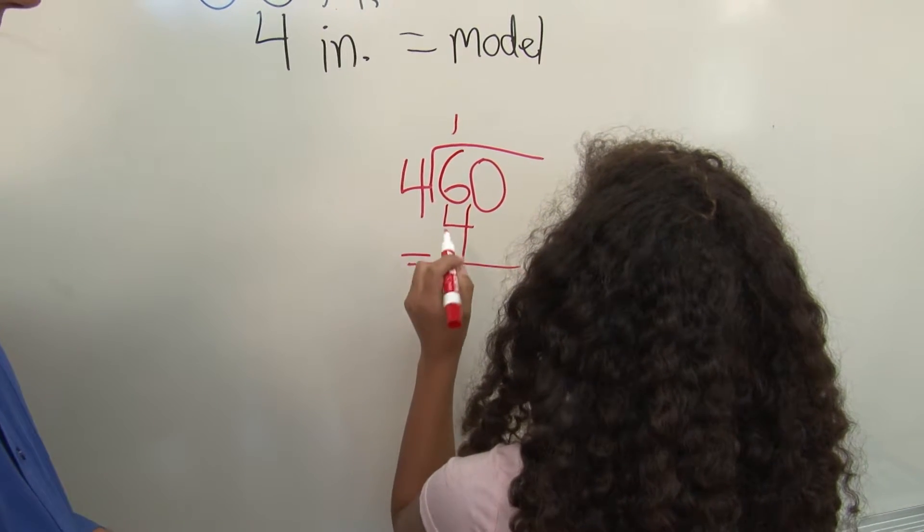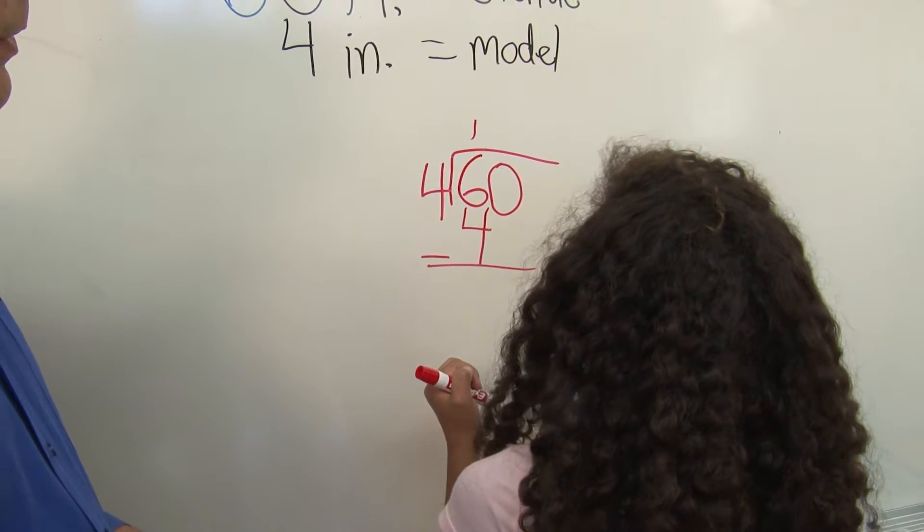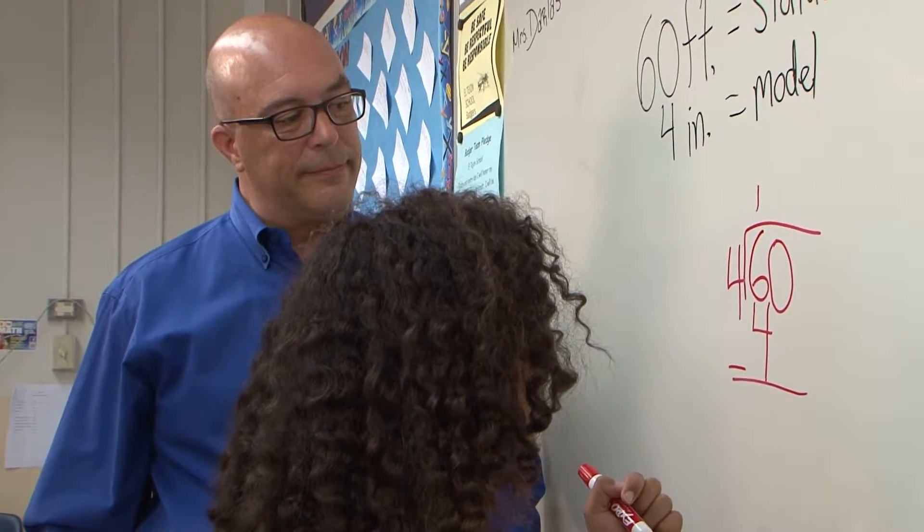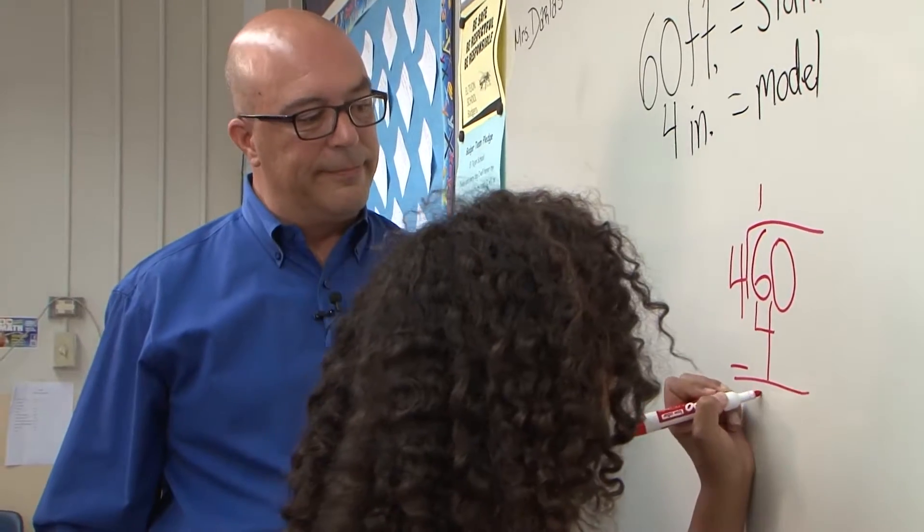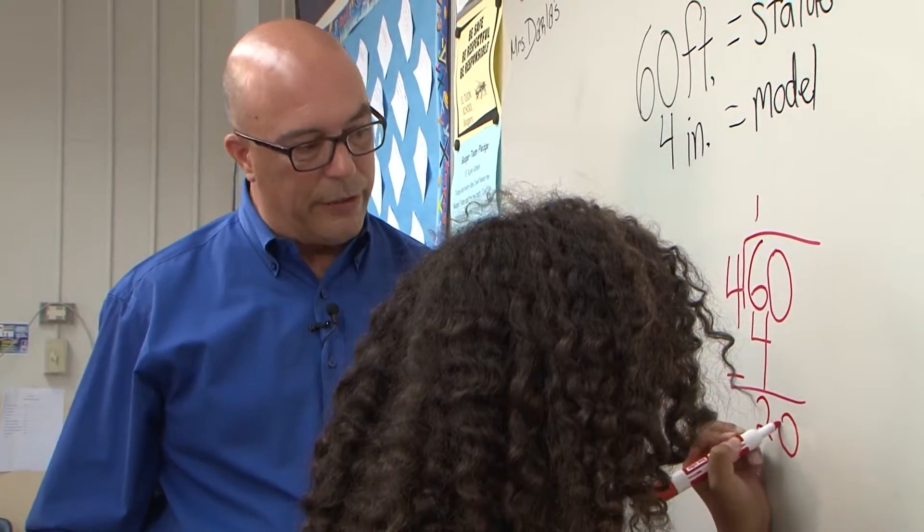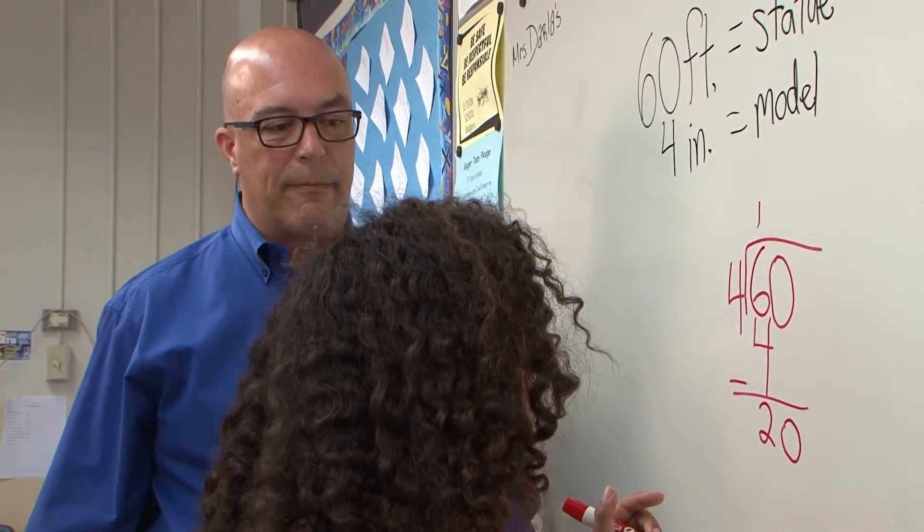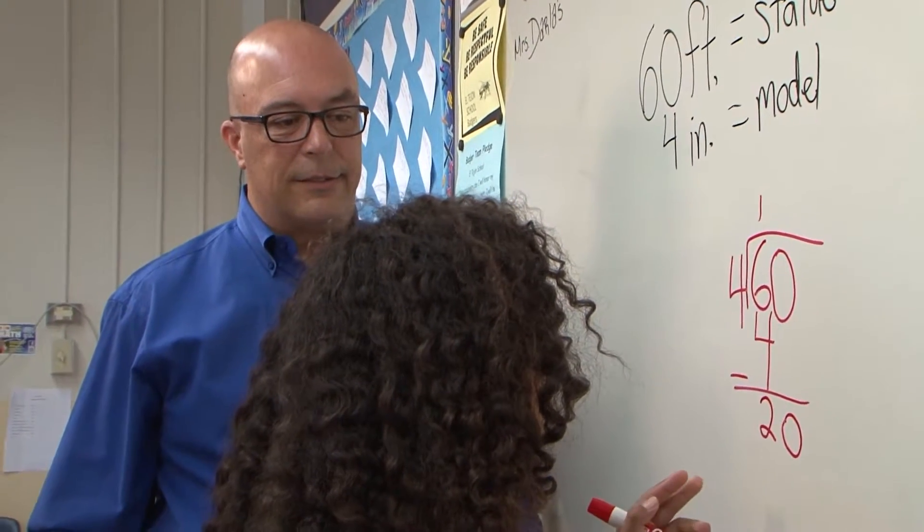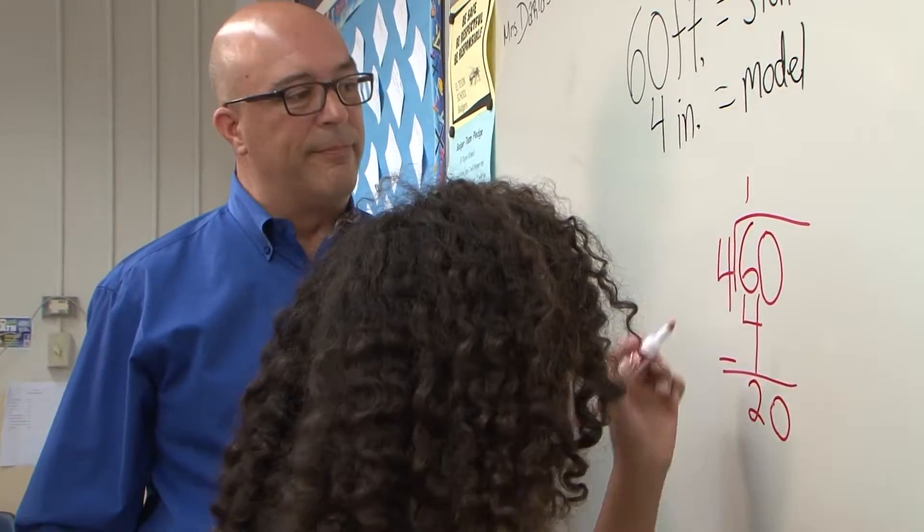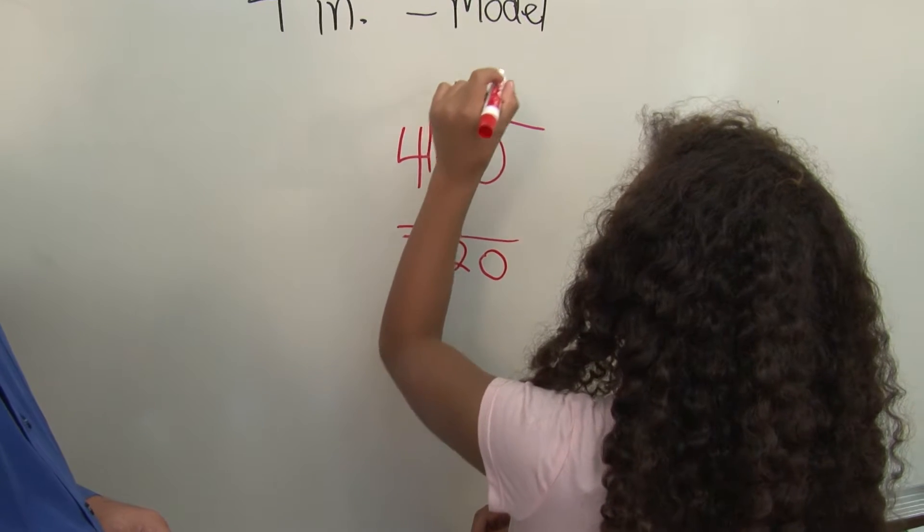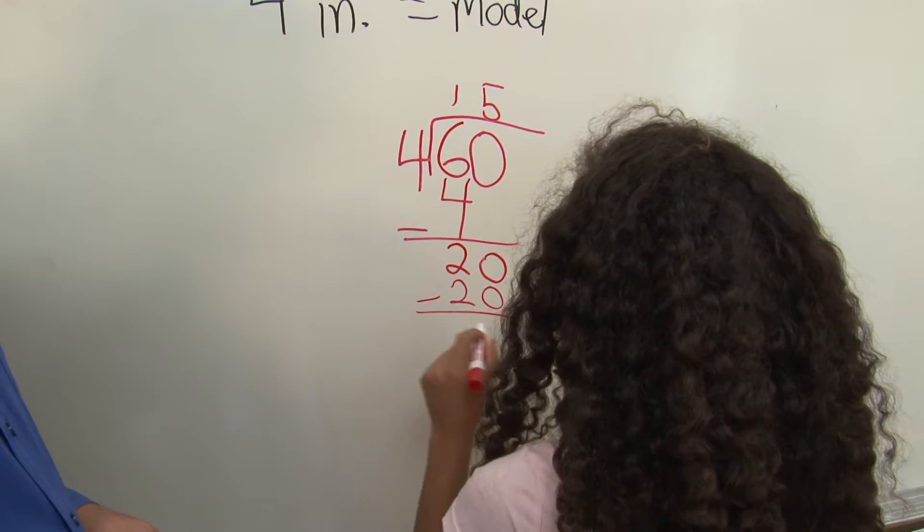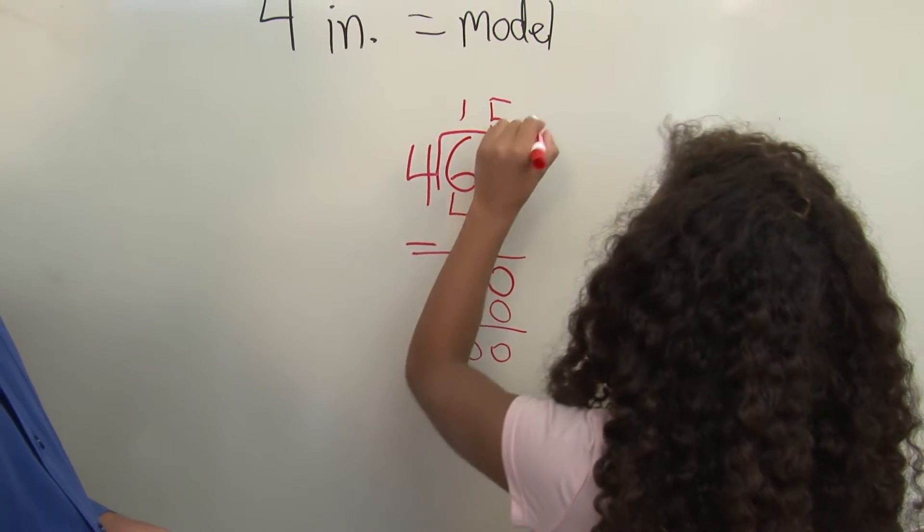So you subtract. 6 minus 4 is 2. Mm-hmm. And now what do you do? Then you bring down the 0. Perfect. 4 goes into 20. 5 times. Mm-hmm. Then that's 20. Right. Then you subtract, which is 0. And the remainder is 0.